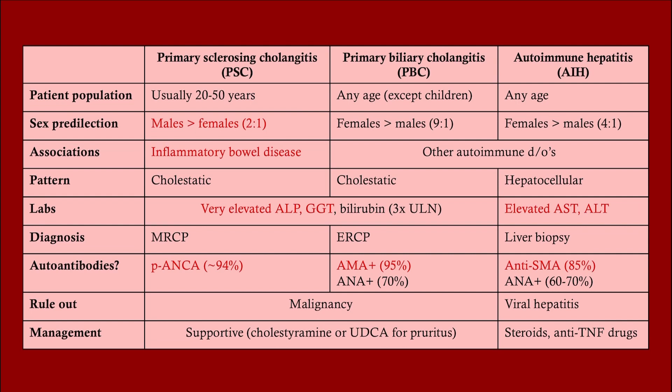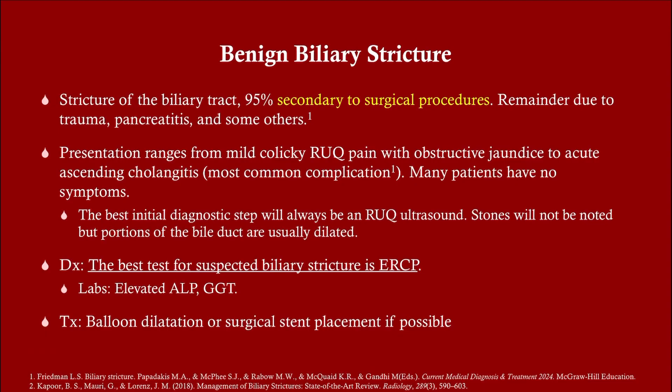Here is your comparison with PBC — primary biliary cholangitis, formerly known as primary biliary cirrhosis — and autoimmune hepatitis. Benign biliary stricture is usually iatrogenic from surgical procedures.